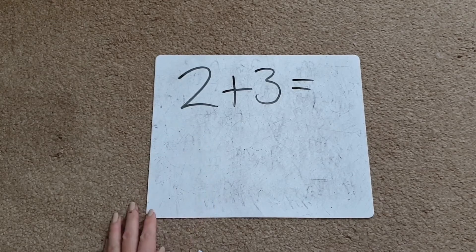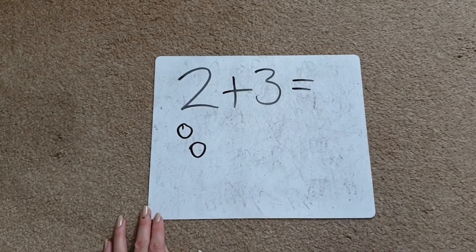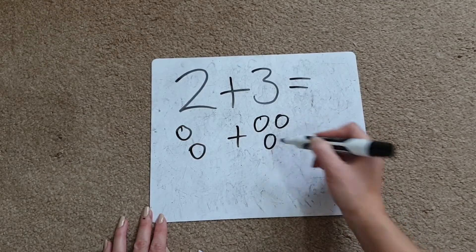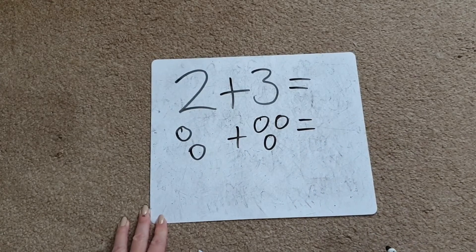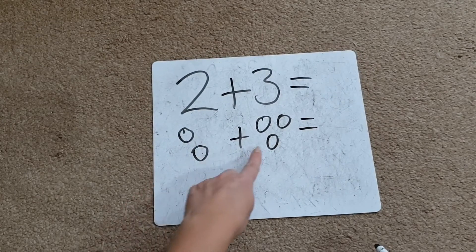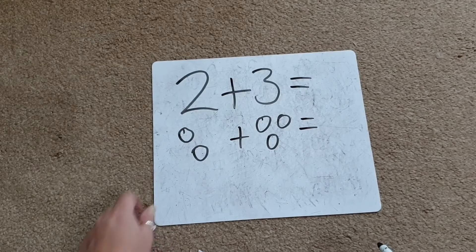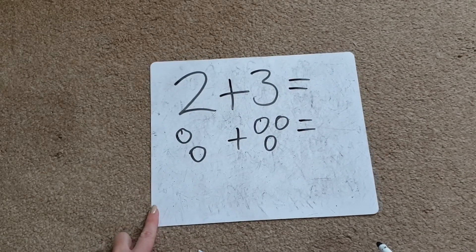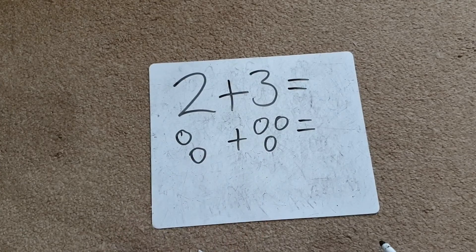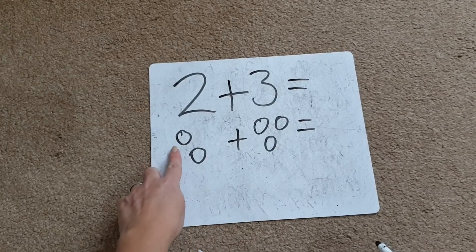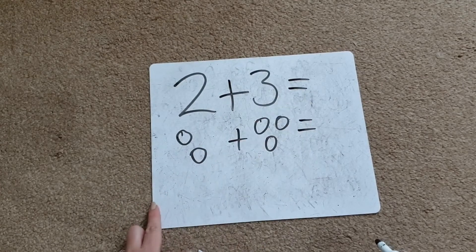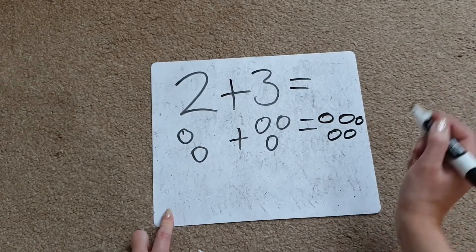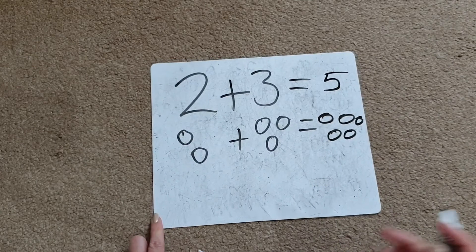For this addition, you could ask your child to draw a picture to help them. Underneath the number two they can draw one, two circles, then write out the addition symbol again, and then underneath the number three they can draw one, two, three circles, then write the equals sign. Make sure the child has drawn out the correct number of pictures or circles, and ask them to touch each picture while they're counting to practice one-to-one correspondence. Then ask the child to count how many circles they have all together to get the answer — one, two, three, four, five. They can either draw five circles to show how many they've got all together, or they can just write the number to show their answer.